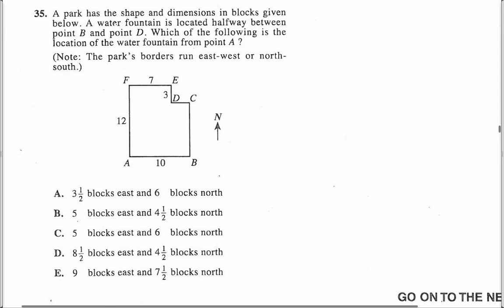Well, here what they tell us is that there's a water fountain and it's located halfway between points B and D. If that's point B and D and I connect them by a line, that means my water fountain is roughly there.